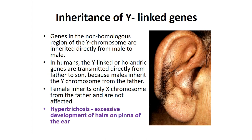The inheritance of Y-linked genes: genes in the non-homologous region of the Y chromosome are inherited directly from male to male. In humans, Y-linked (holandric) genes are transmitted directly from father to son, because males inherit the Y chromosome from the father. Females inherit only the X chromosome from the father and are not affected. The best example of a Y-linked character is hypertrichosis — the excessive development of hairs on the pinna of the ear.